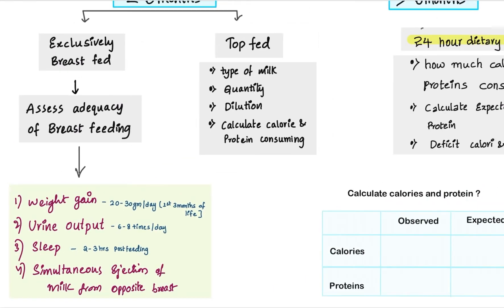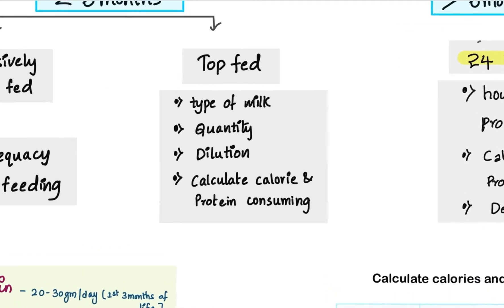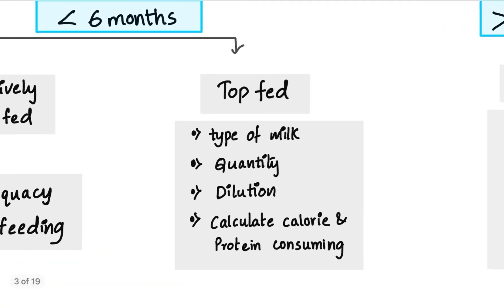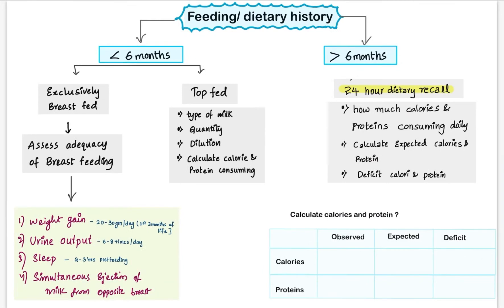If the child is less than 6 months old but is on top-fed like cow milk or buffalo milk, we have to ask what type of milk they are giving, how much quantity, and in what dilution — whether 1:1 ratio or 1:2 ratio, like 1 cup of milk with 1 cup of water or whatever dilution they are giving. Then we have to calculate the calories and proteins the child is consuming in a table.